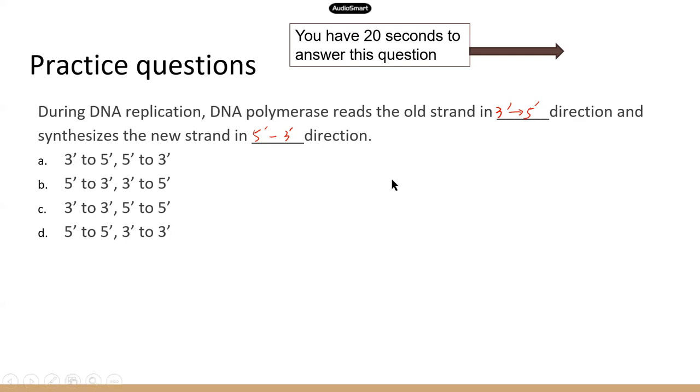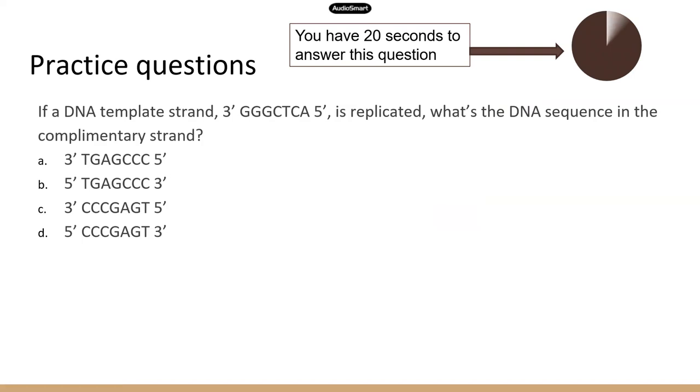And this is true for DNA transcription as well. If you have a DNA strand and you're going to use that DNA strand to synthesize mRNA, the enzyme will read the DNA strand from three to five, and the new mRNA strand will be synthesized from five to three. All right, next question.